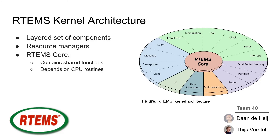Let's take a look at the RTEMS kernel architecture. RTEMS is built as a set of components that are layered, and each component provides services to an application. An application can access these services through a resource manager, and these resource managers are interfaces formed by grouping functions together into a single set. For instance, there is a task manager — a resource manager that groups task-related functions together. Then there is the RTEMS score, which contains functions shared between all these resource managers, and it only depends on certain CPU routines.